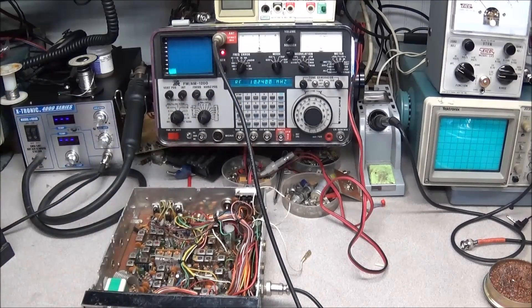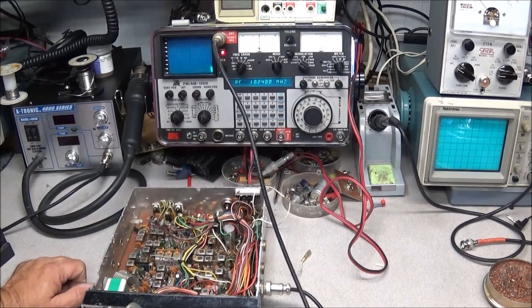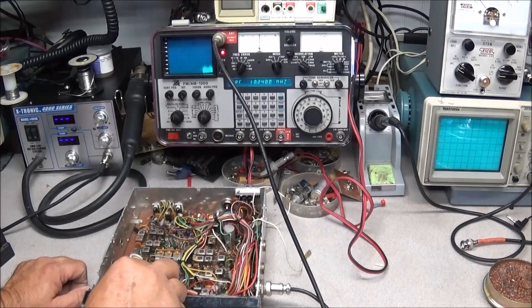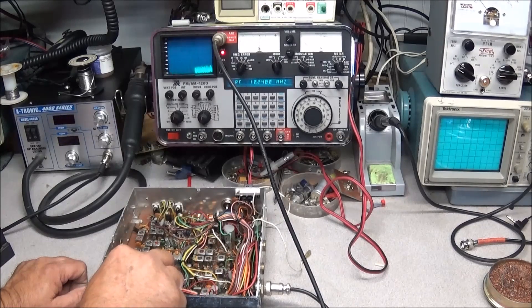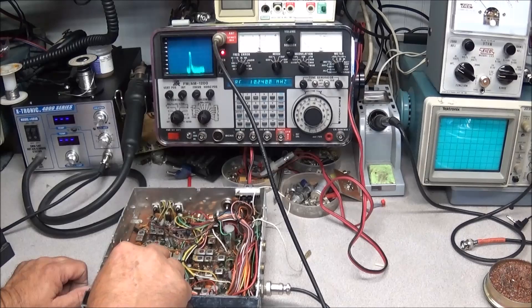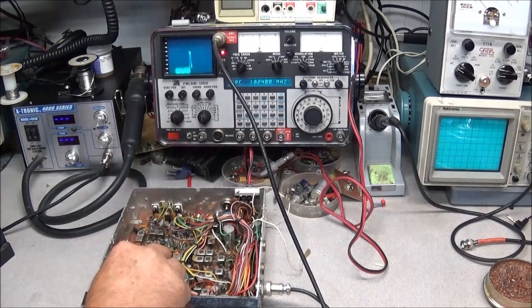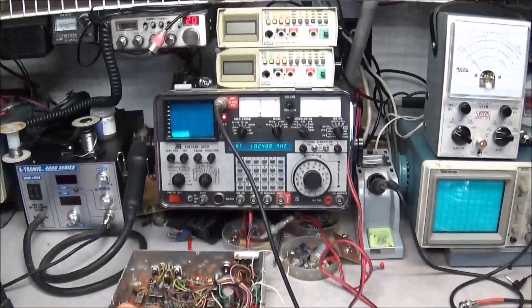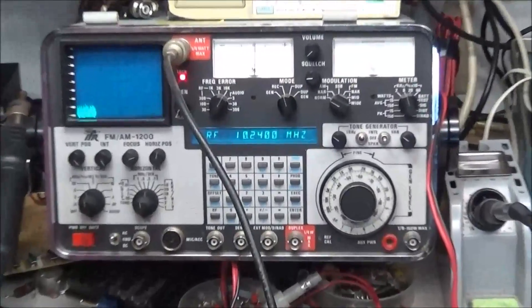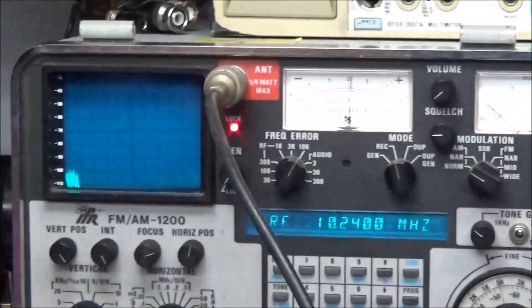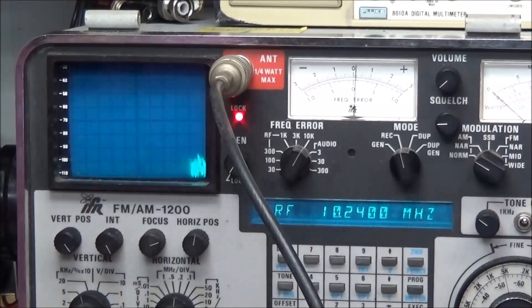We've got the monitor set for 10.240, and we'll take our probe and just get it near the 10.240 oscillator. And there it is. You can see that we've got a good healthy signal on our spectrum analyzer.